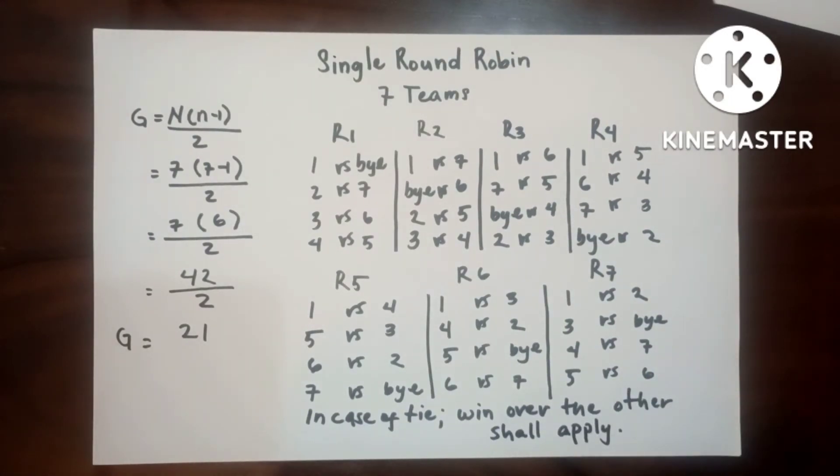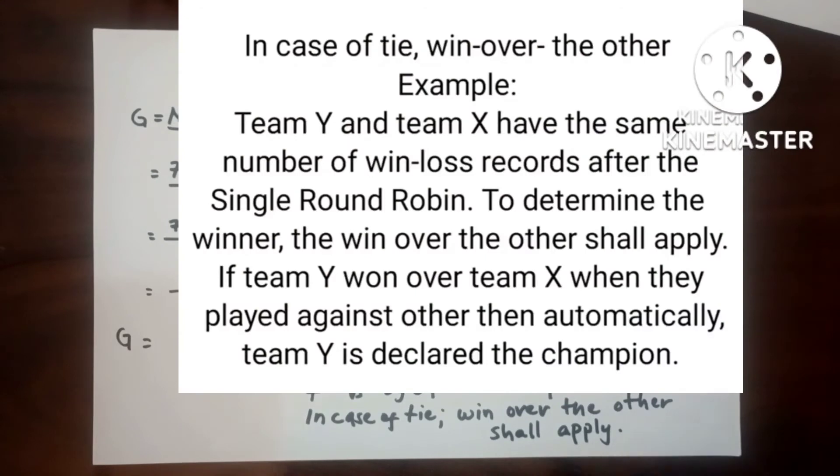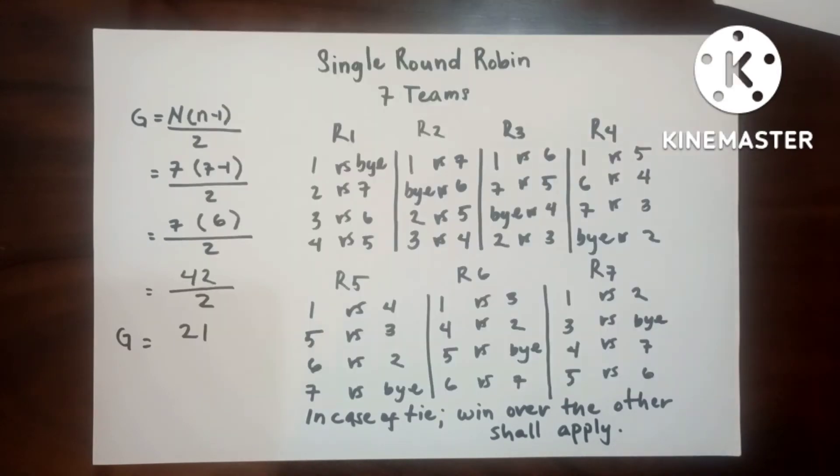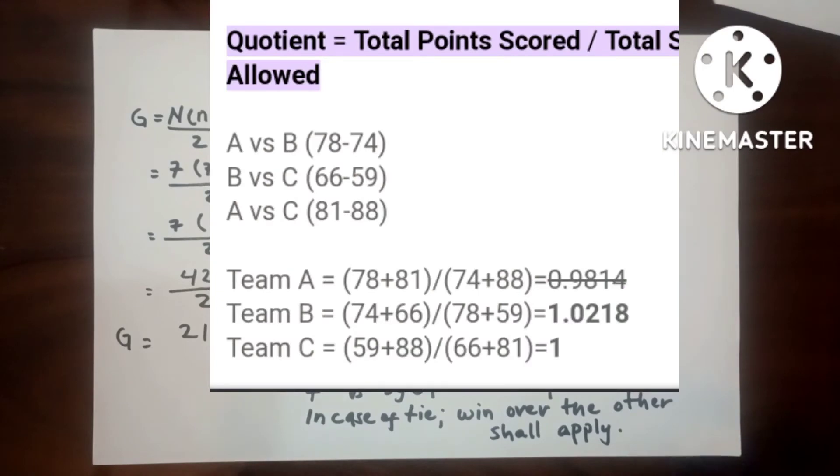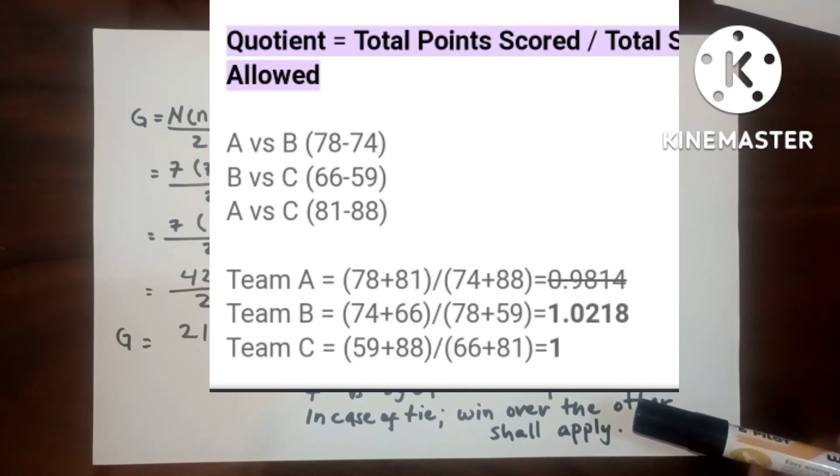In case of tie, win over the other shall apply. But in case of triple tie, the quotient system shall apply.